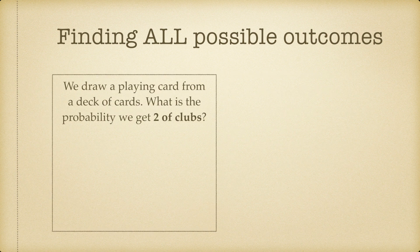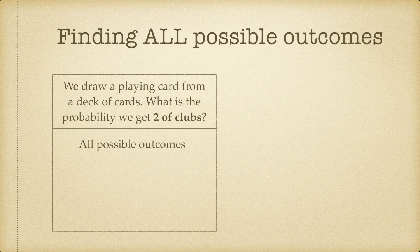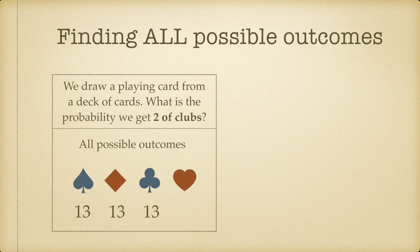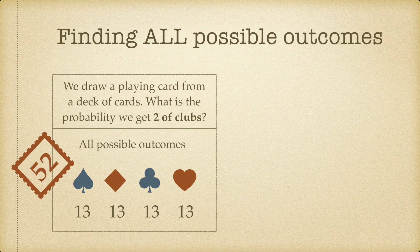Say we were to draw a playing card from a deck of cards. What is the probability that we get the two of clubs? What are all possible outcomes when we draw one card from a deck? We know there are 13 cards of spades, 13 cards of diamonds, 13 cards of clubs, and 13 cards of hearts. So there are a total of 13 plus 13 plus 13 plus 13, which is 52 cards. If you were to draw any one card from a deck, we can draw any of these 52 cards, so there are 52 possible outcomes.